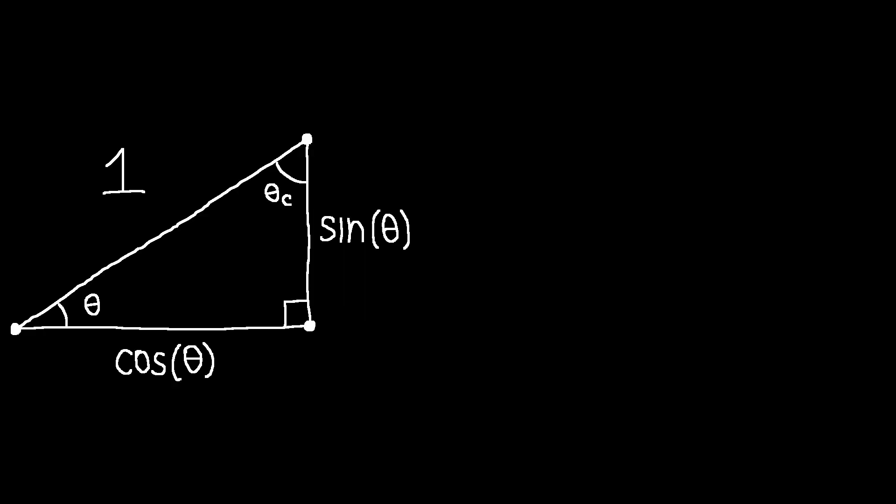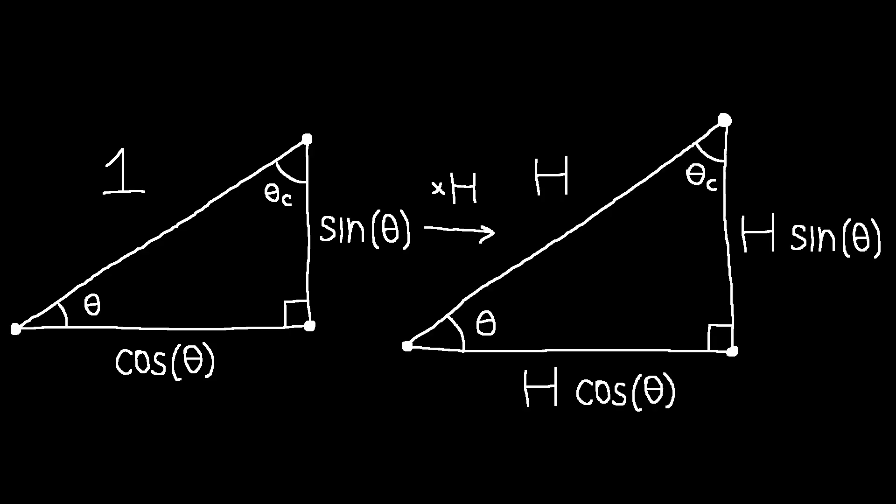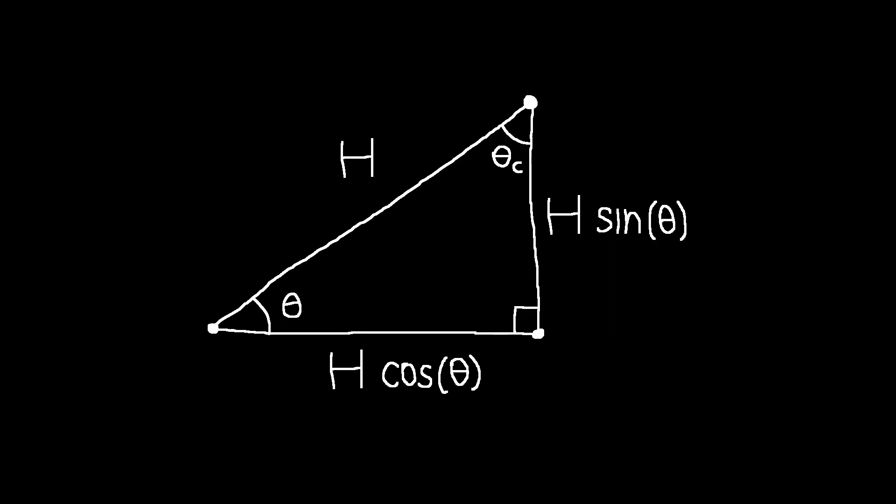Since uniform scaling preserves angles, we can scale this right triangle by a factor of h in order to deduce that a general right triangle with a hypotenuse of length h has its other side lengths equal to h sine theta and h cosine theta, respectively, for some acute angle theta. This diagram is probably the single most important piece of right triangle trigonometry.